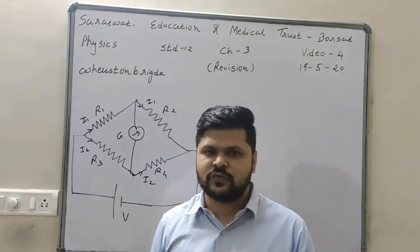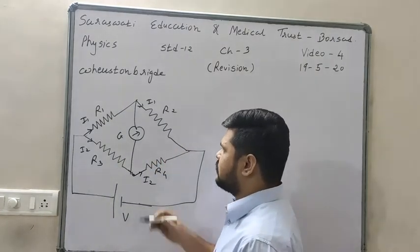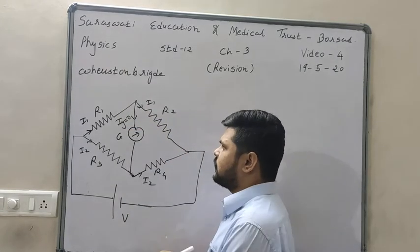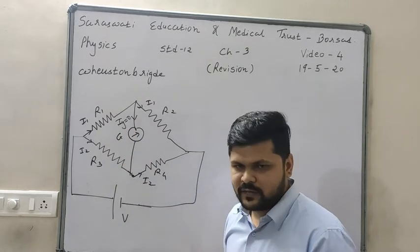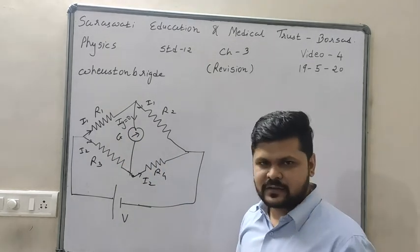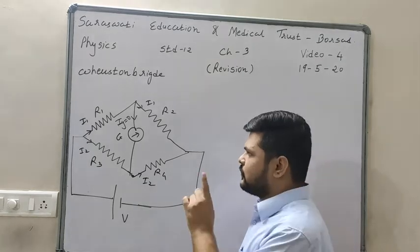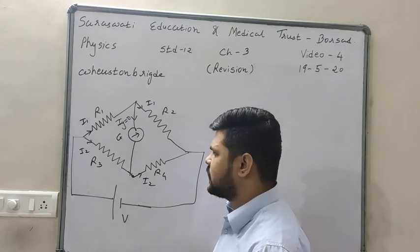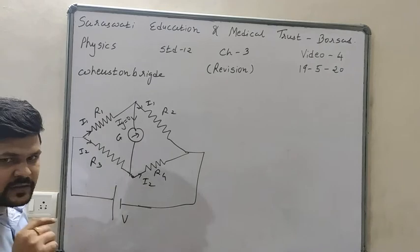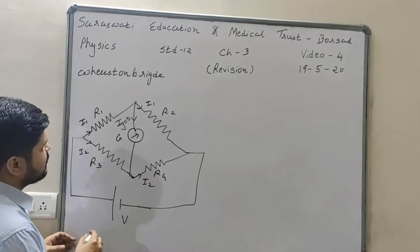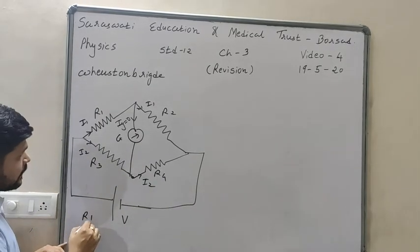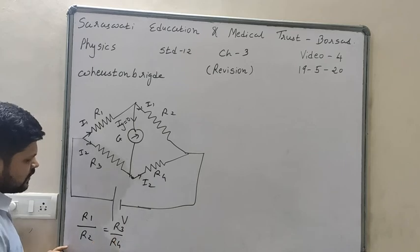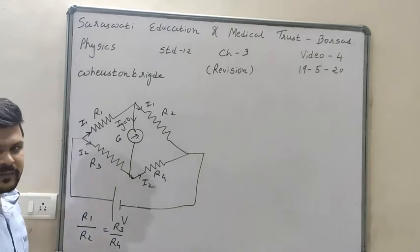You should know the balance condition of Wheatstone Bridge. When the current flowing through the galvanometer is 0, then this Wheatstone Bridge is called in balanced condition. The condition for balanced Wheatstone Bridge is R1/R2 = R3/R4. You have already derived this formula in your main theory lectures.